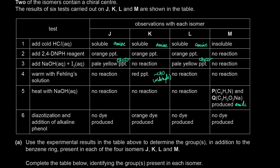The last test is diazotization followed by addition of alkaline phenol. Only K undergoes diazotization. Diazonium salts are produced from phenylamines — where the amine is directly bonded to the benzene ring, i.e., NH2 bonded directly to the ring. So K has an amine group, but specifically it's a phenylamine group because it can form diazonium salts — it undergoes diazotization.